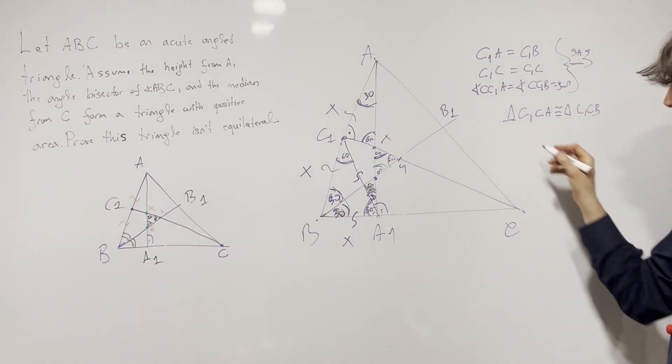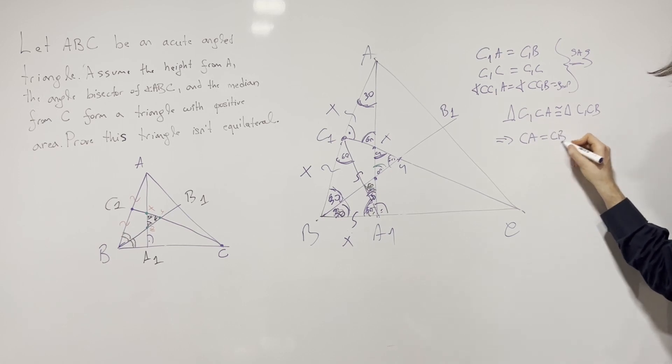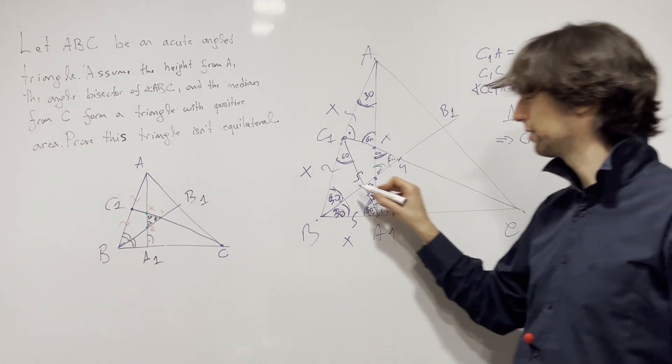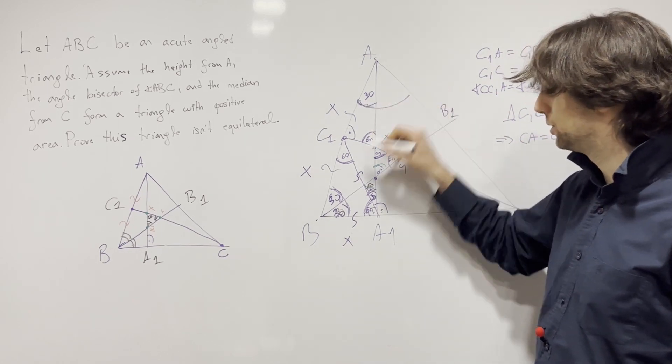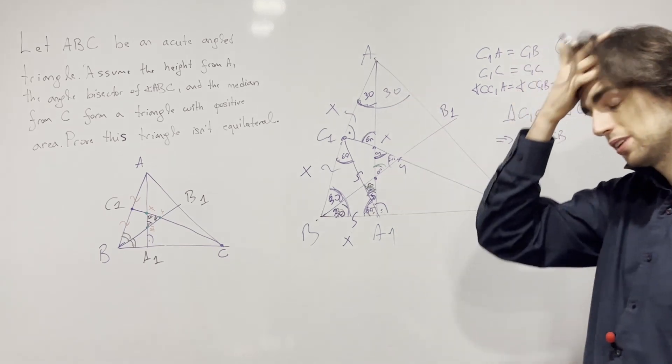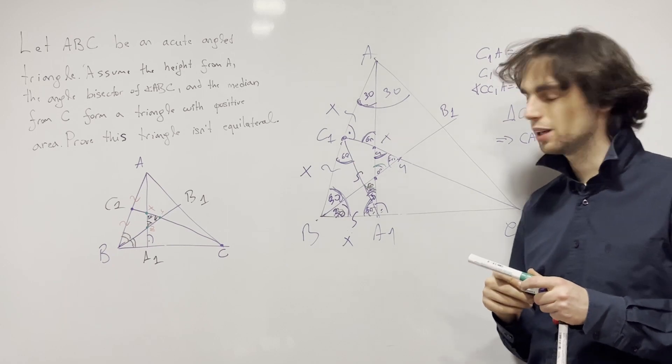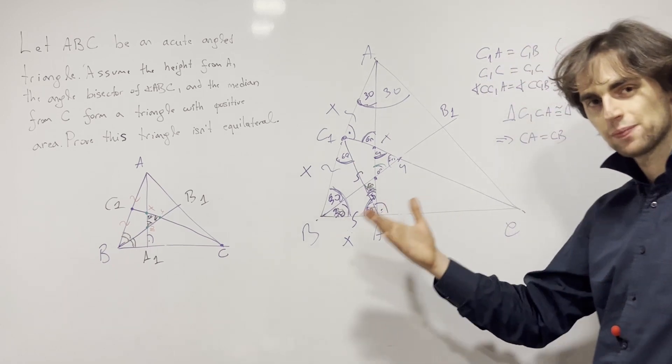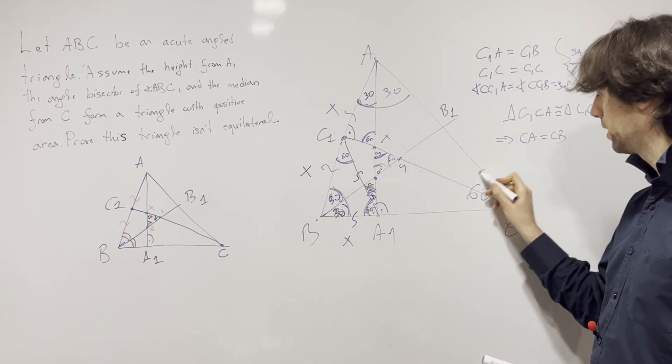And what do I get from here? Well I get that CA is equal to CB. So now given this angle is 60, that means that this whole angle is equal to this one is equal to 60, so this is 30. And now with that, what does that mean for the triangle ABC? Well it means that this triangle ABC is in fact equilateral.